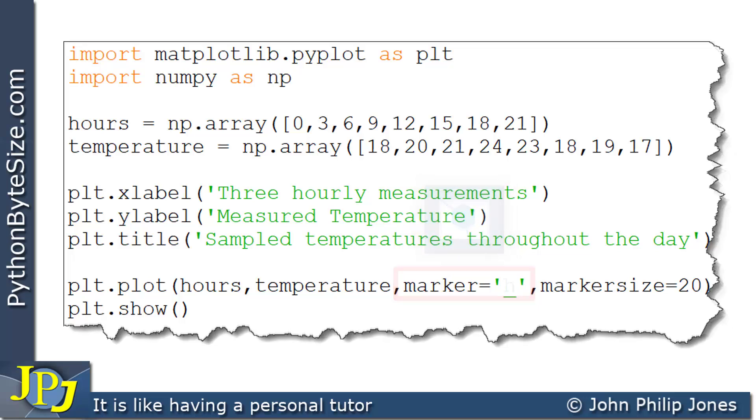Moving on again, you can see I've now changed the marker to an underscore. And when we run this program, you can see this is the shape we get for the marker.